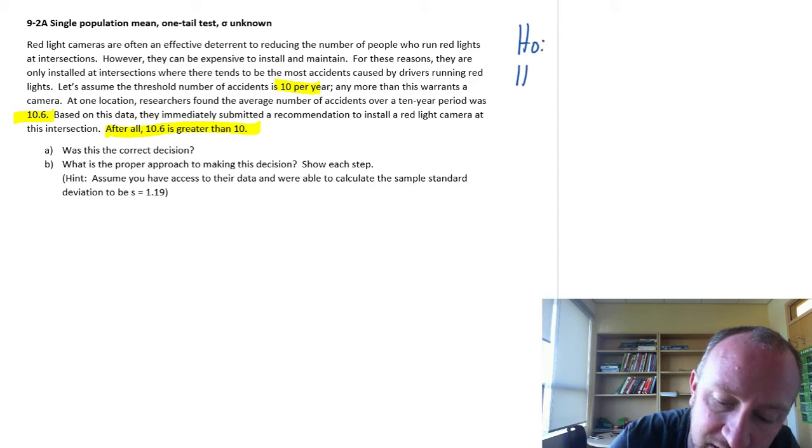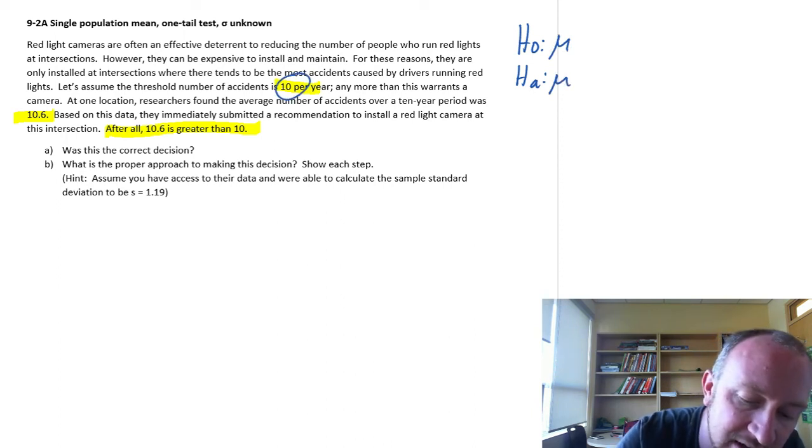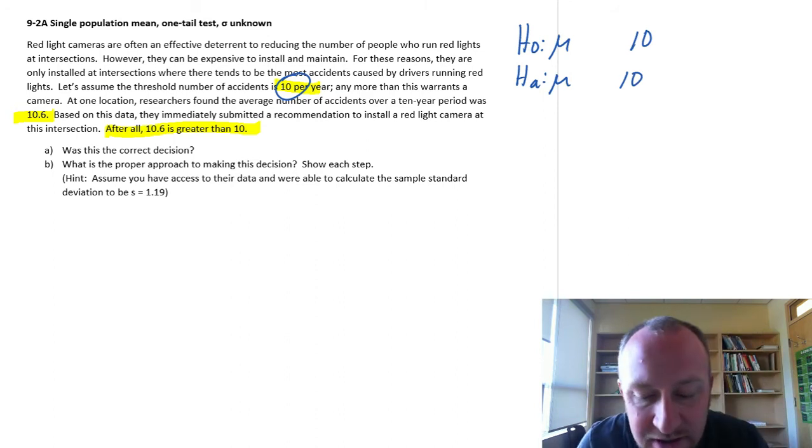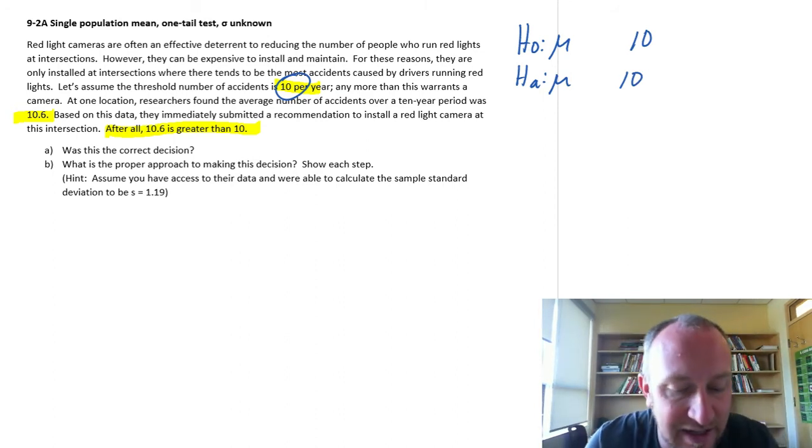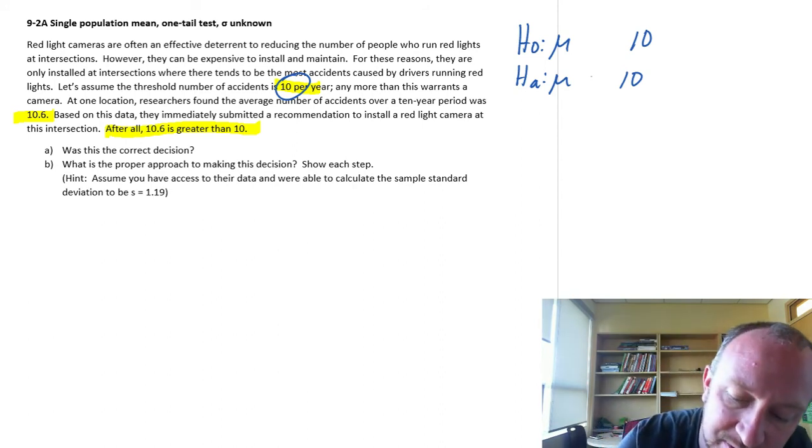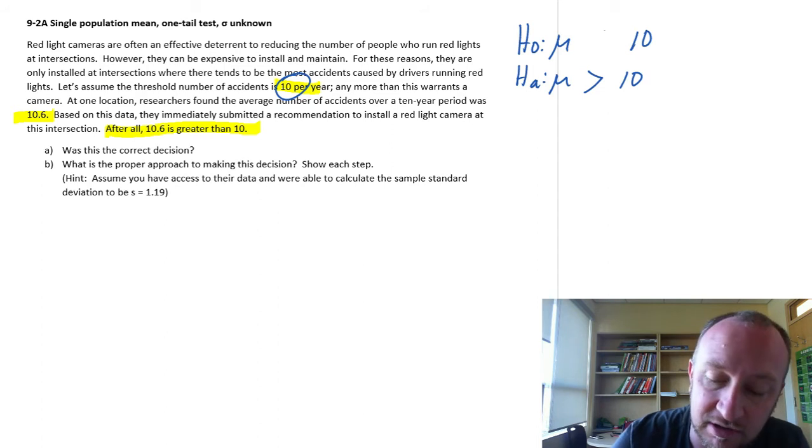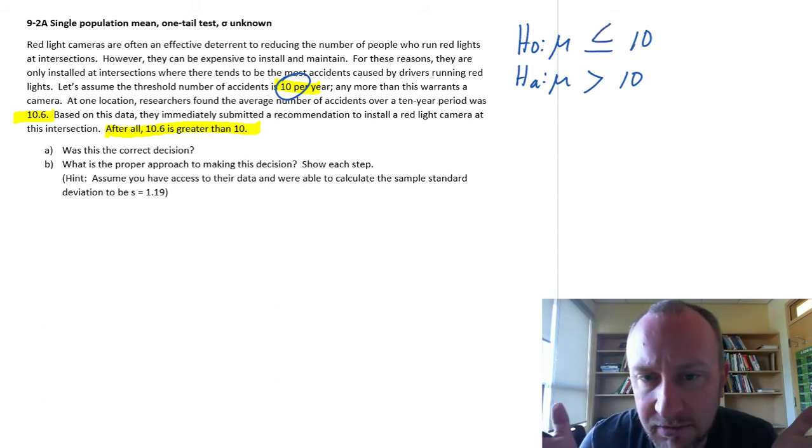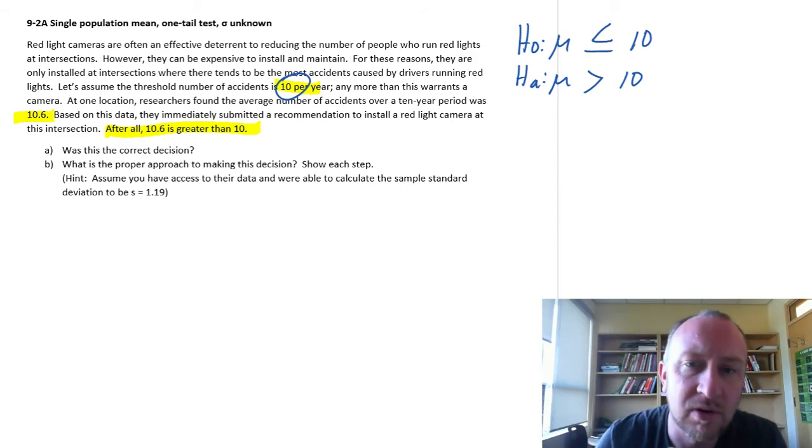We'll start off. We'll formulate the null and alternative hypotheses. We're testing a population mean, and we're testing a hypothesized value of 10. Now, we are going to install a red light camera if we have evidence to show that the average number of accidents is greater than 10. So that shows up in our alternative hypothesis. Our null hypothesis is that it is not greater than 10, so less than or equal to.